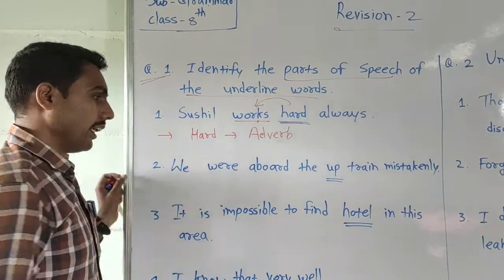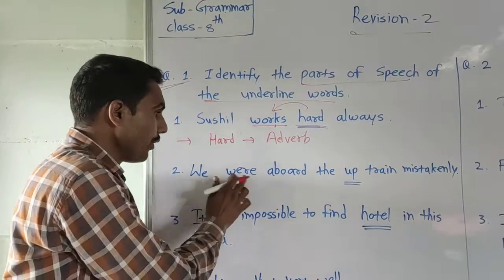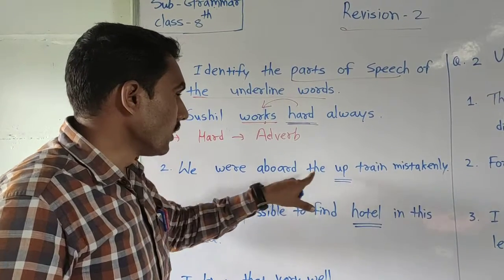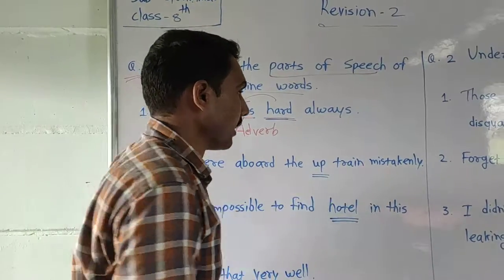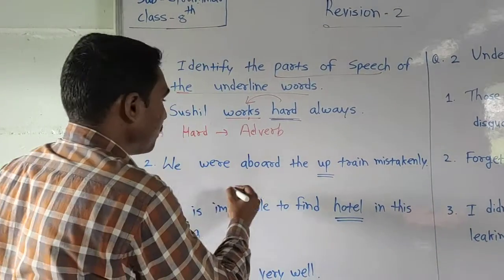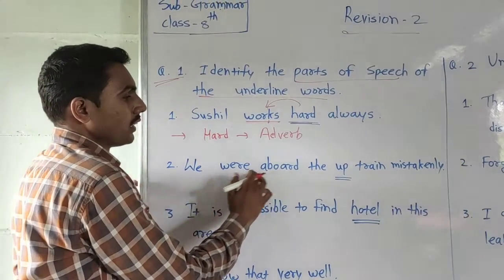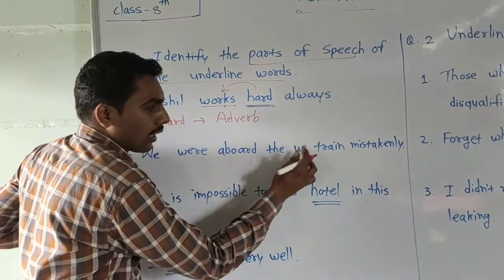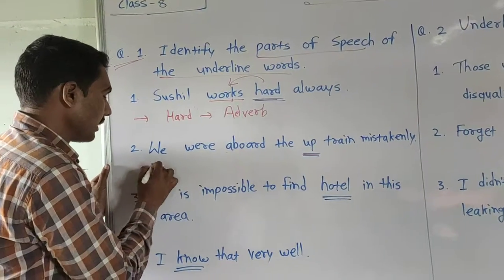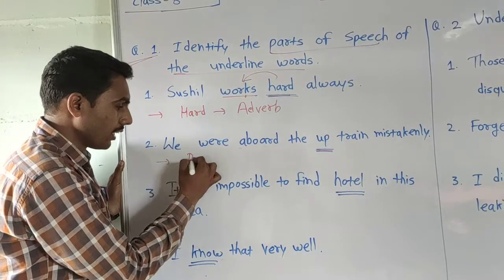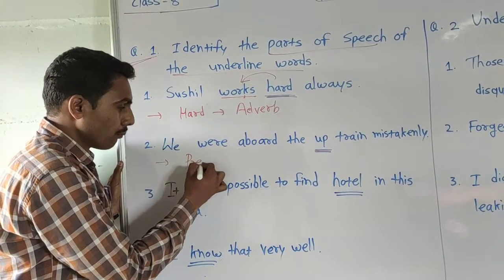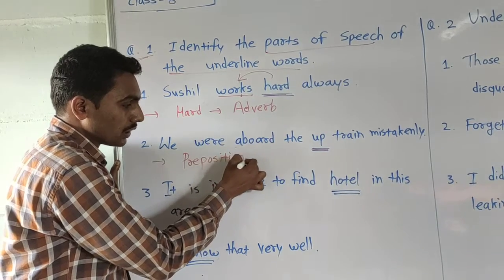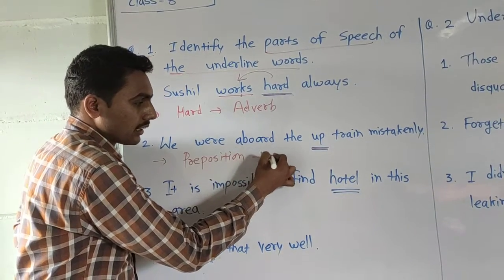Next sentence: 'We were aboard the up train mistakenly.' Look here — 'up' is the underlined word, and it is a preposition. You can write here: preposition. That word is 'up.'